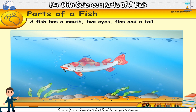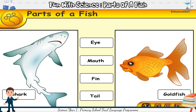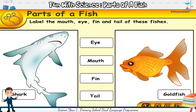A fish has a mouth, two eyes, fins and a tail. These are different kinds of fishes. They are a shark and a goldfish. Label the mouth, eye, fin and tail of these fishes.